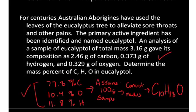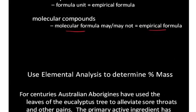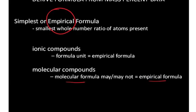We assumed that we had a 100-gram sample, and then we converted these percentages to grams to moles. We found that the whole number ratio for eucalyptal was C10H18O. That's the empirical formula for eucalyptal.